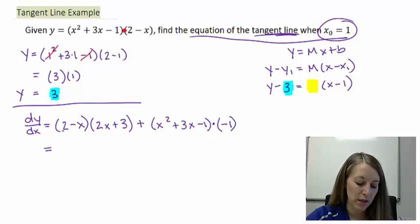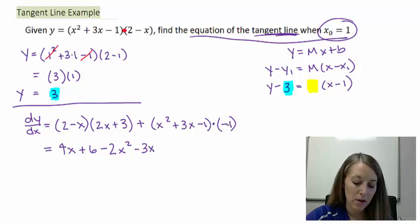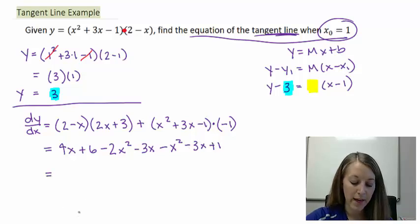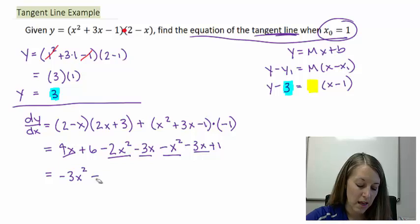So let's go ahead and simplify this. We need to FOIL my first out. 2 times 2x gives me 4x. Outside gives me a 6. Inside gives me a negative 2x squared. And last gives me a negative 3x. Here let me distribute this negative 1. Basically that changes the signs of my second polynomial there. Negative x squared minus 3x plus 1. Combining like terms and writing it in descending order. Negative 2x squared minus x squared gives me a negative 3x squared. 4x minus 3x minus 3x gives me a negative 2x. And my constant 6 plus 1 gives me 7.